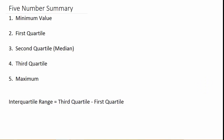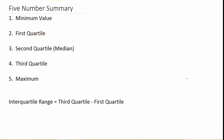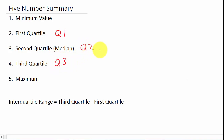So first, what we have to find when we're going to do a box and whisker plot is this five-number summary. We want to find the minimum value of the data set, the first quartile — we can abbreviate that Q1 — the second quartile, which is also the median, the third quartile, abbreviated Q3, and then the maximum value. And then we can find the interquartile range — that's the third quartile value minus the first quartile value.